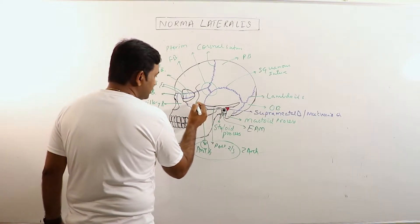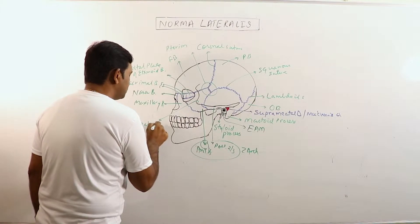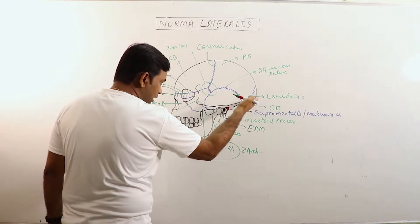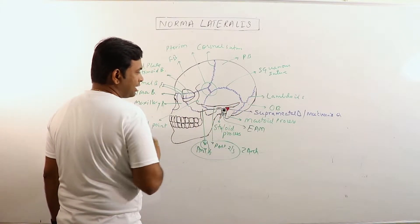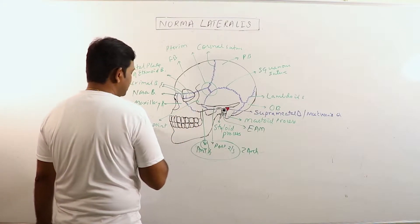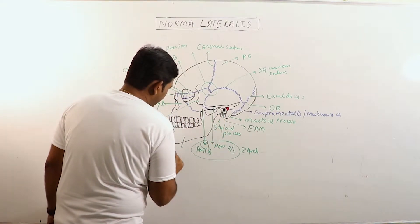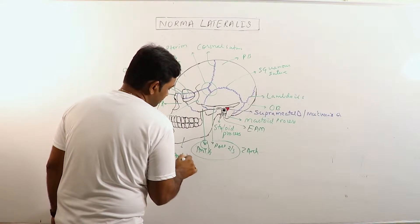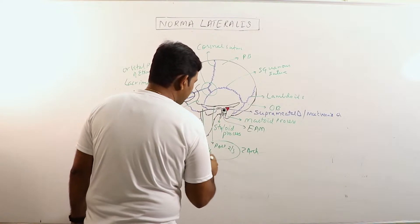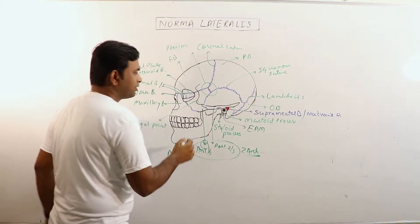Now this is the jugal point. The jugal point is basically the meeting point of the upper border of the zygomatic arch and the zygomatic bone proper. This is the jugal point. Now this is the mandible, and this horizontal bar is the zygomatic arch.